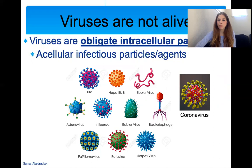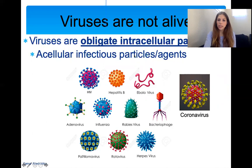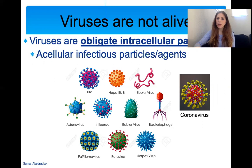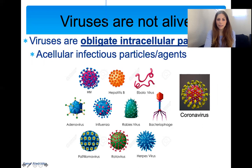A lot of times textbooks will also define them as acellular infectious particles or agents. When we put 'a' before any word as a prefix, it means not. So not cellular — they're not made up of cells, and they're infectious. We say particles or agents. It would be easier to say acellular organisms, but that would imply they're alive, which they're not. So they're infectious particles, infectious agents, intracellular pathogens — any of these terms can be used. They cause a lot of infections ranging from very mild to very severe, and they're not alive.